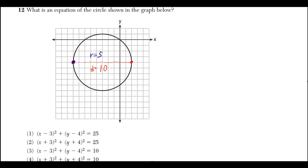And if you count over 1, 2, 3, 4, 5, then that's a radius of 5.